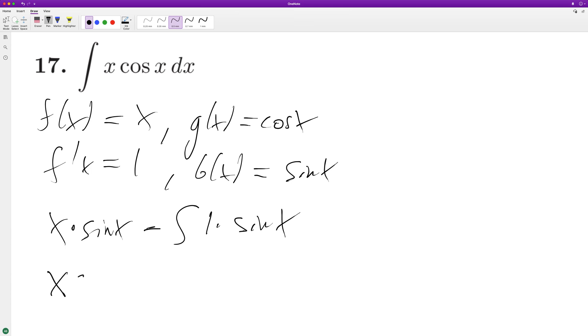So we get x sine of x plus cosine of x plus our generic constant C, and that's it.